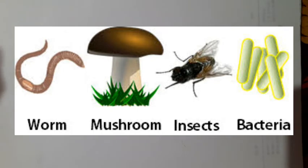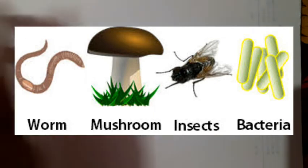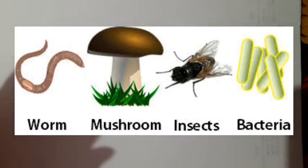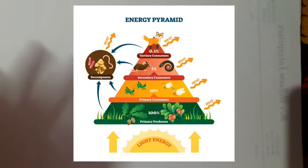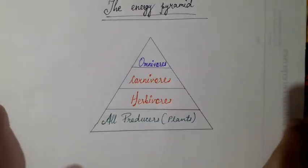These help in the degradation of the dead and decaying matter which is left over after the plants and animals die. What exactly is going on in this food cycle? This overall process which happens is called as the trophic level.